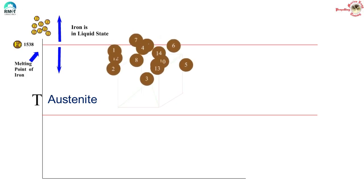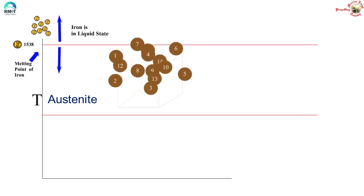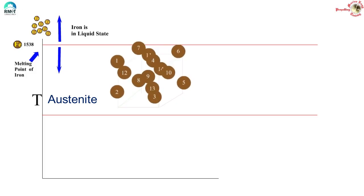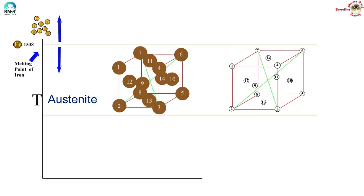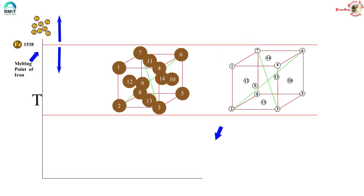If you imagine a cube and name the vertices 1 through 8, you can see that iron occupies each vertex and also the center of every face of the cube — so effectively there are 14 atoms of iron in one unit cube. In this video we are going to cool iron only down to about 900 degrees. Many things happen if we cool it further, but that will become very complicated and we will handle it in the next video.